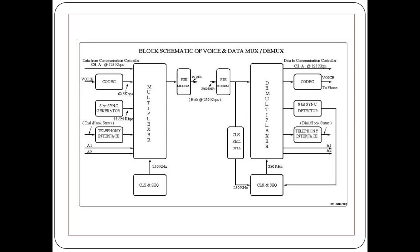This is the schematic diagram of voice and media. It includes a UL codec, sync generator, and telephonic interface. All the signals are coded from the data through a communication channel to the multiplexer, which is given to Frequency Shift Keying. A clock and sequencer is used to change the clock. The signal then goes to the demultiplexer with FSK and clock signal. From the demultiplexer you get a codec, 8-bit synchronization reductor, and telephonic interface, producing the output.